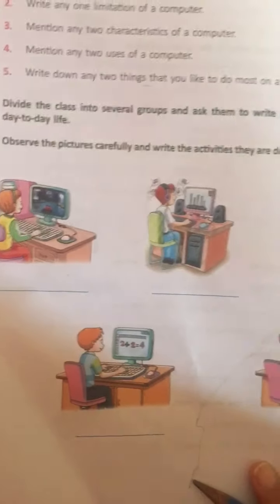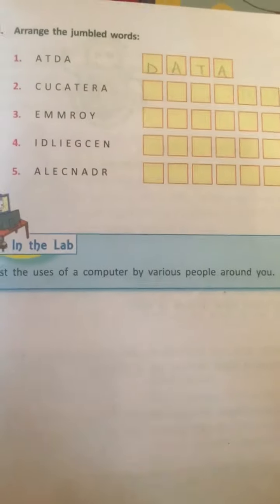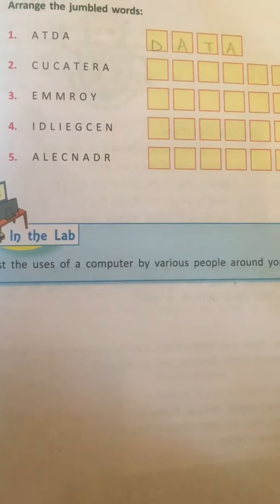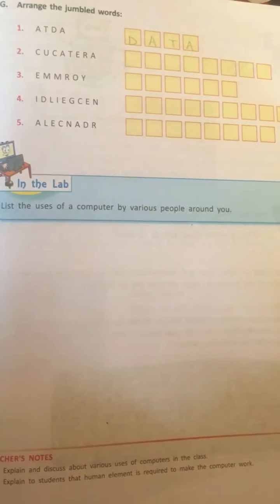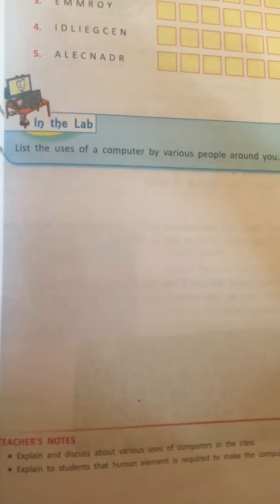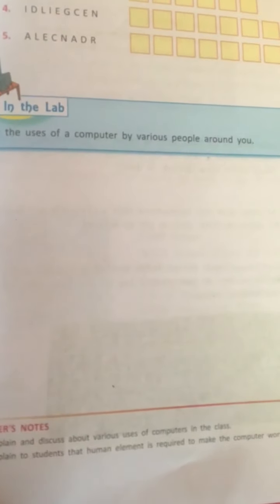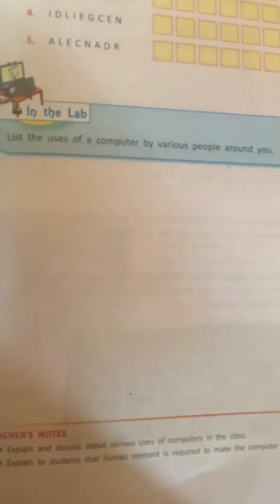Next, observe the picture carefully and write the activities which you can do. Arrange the jumbled words. You can observe what various people around you use computers for. You have to see what users use the computer for. Hopefully you will complete this exercise, so complete your exercise.